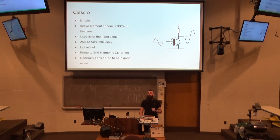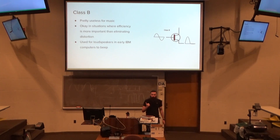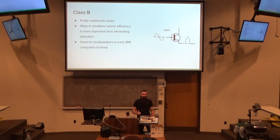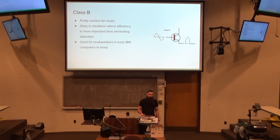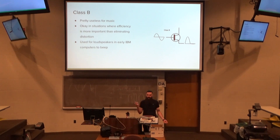You are also prone to second harmonic distortion with Class A versus third or other types in other classes, but it is greatly reduced compared to other techniques. It's pretty useless for music — it's only acceptable where you care about efficiency so much that you're happy sacrificing half the waveform. This is like if you want to make a beep. IBM computers used this type of amplifier to make their computers beep back in the day.